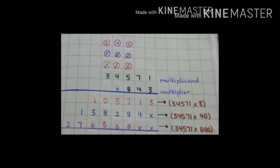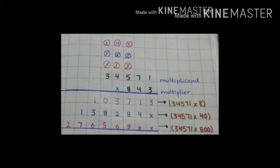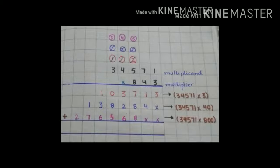Next place: 4 times 8 is 32, plus carry 4 is 36 — 6 ko neeche write kareenge and 3 as a carry 10,000 place pe. Next place: 3 times 8 is 24, plus carry 3 is 27 — so aap 27 write kareenge. So students, now aap 3 steps ko add kareenge.